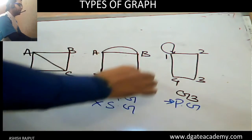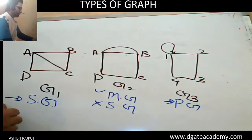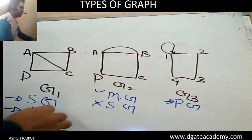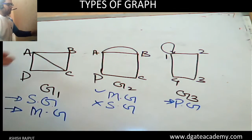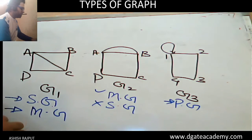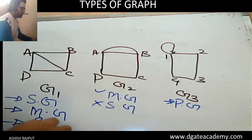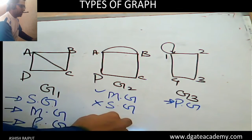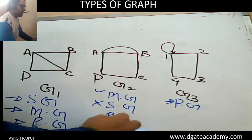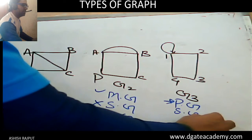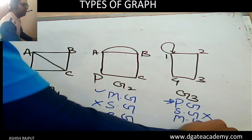In the multi-graph, no loops are allowed, so this graph is also known as a multi-graph — yes, this is also a multi-graph because there is no loop. This graph can also be called a pseudo graph. But this is not a simple graph and this is also not a multi-graph.